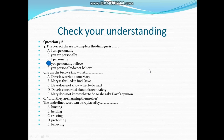Question 5: from the text we know that answer is E — Mary does not know what to do, so she asks Dave's opinion. Question 6: 'They are harming themselves' — the underlined word can be replaced by A. Hurting.